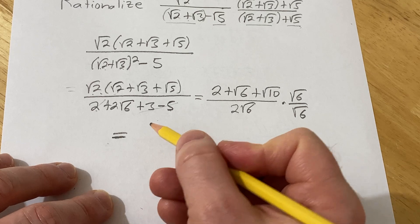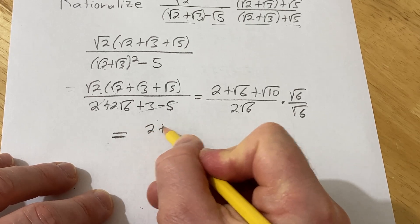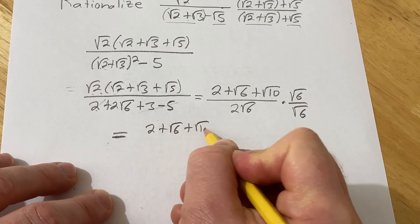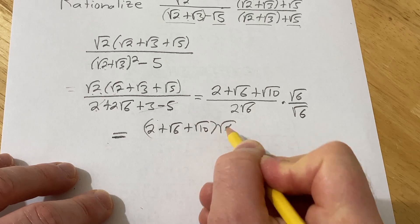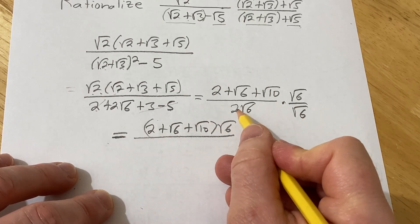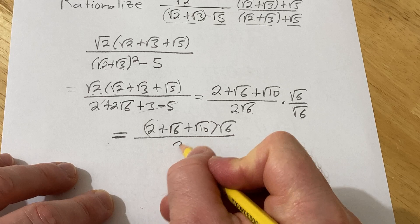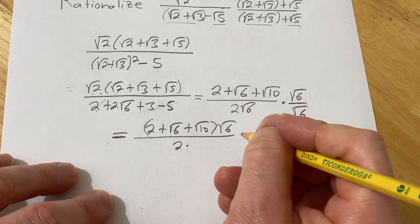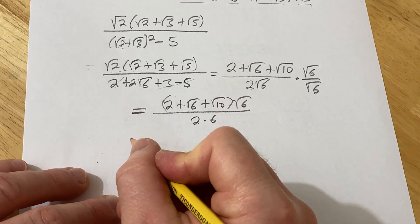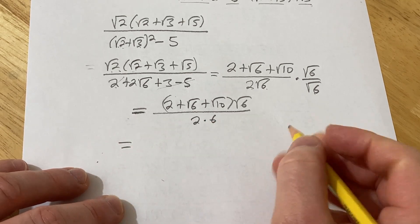So we'll get 2 plus square root of 6 plus square root of 10 times square root of 6 over and then here we get this times this is just 6. So we get 2 times 6. So that's 12. So this is equal to, hmm.